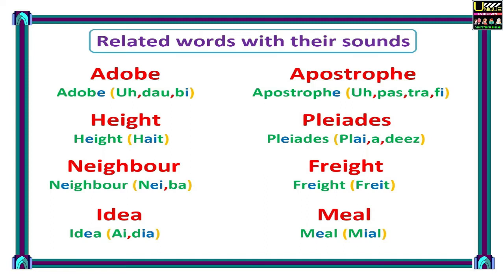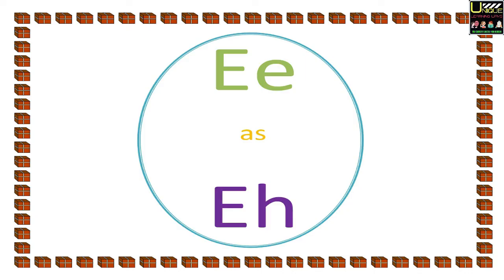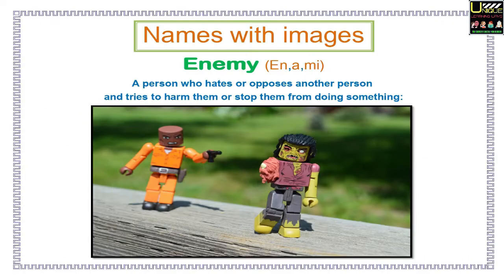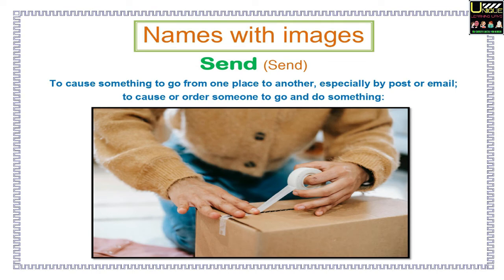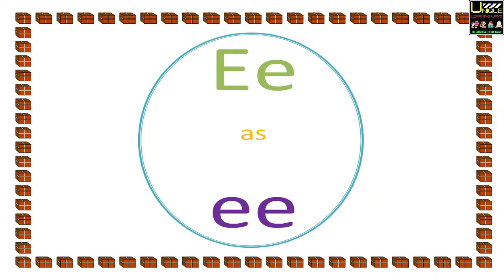Freight, Idea, Meal. E as in Names with images. Here you will see the word, its explanation with an image. Enemy: a person who hates or opposes another person and tries to harm them or stop them from doing something. Send: to cause something to go from one place to another, especially by post or email, or to call or order someone to go and do something.